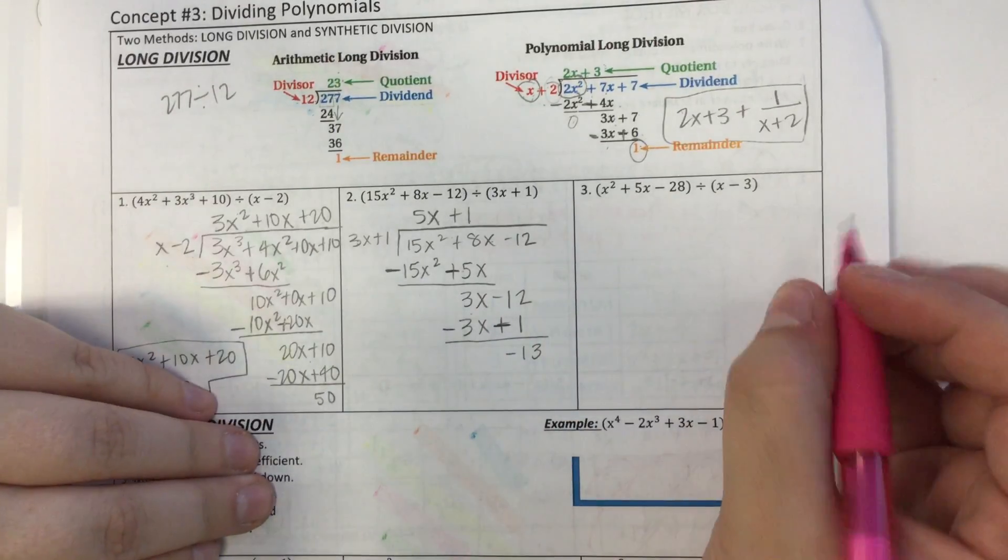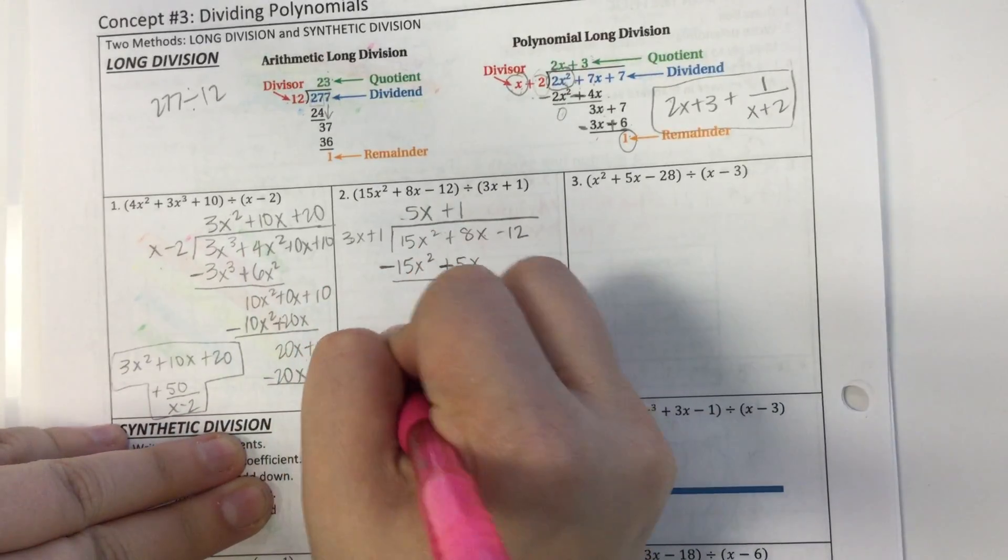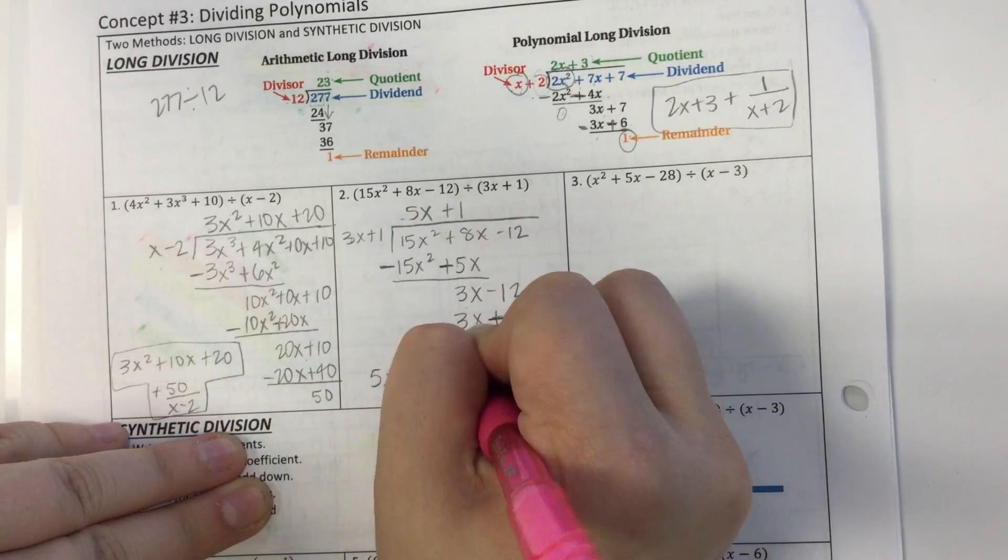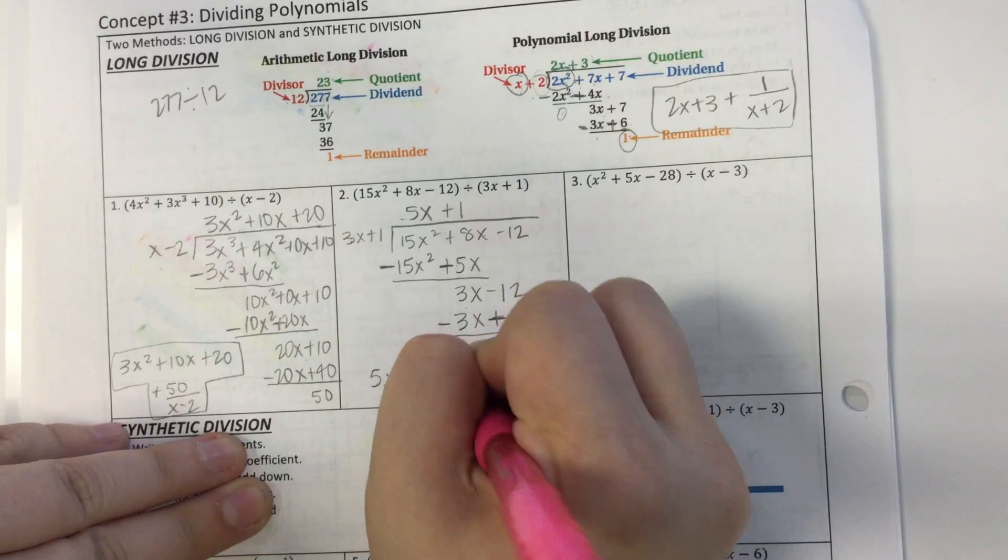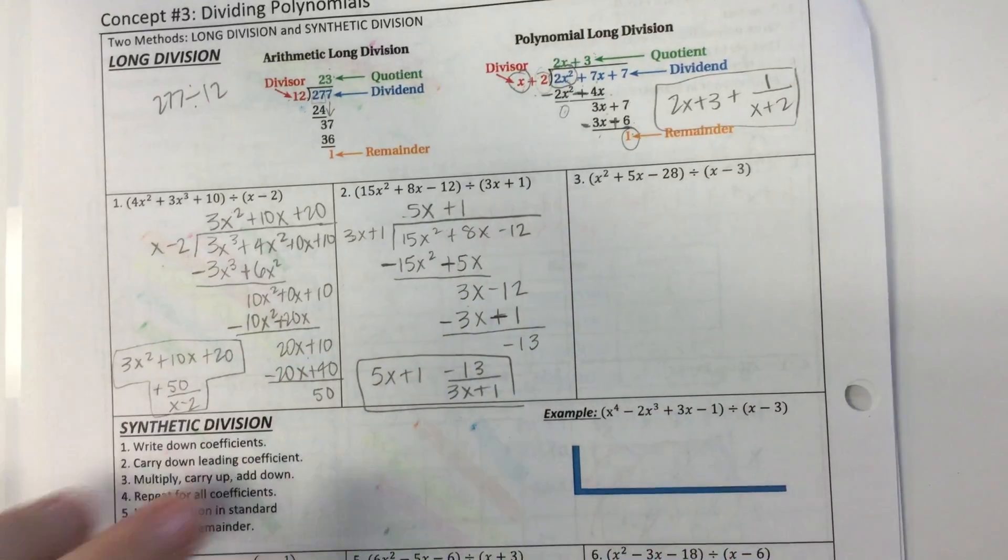So my answer is 5x plus 1 minus 13 over 3x plus 1. And that's it.